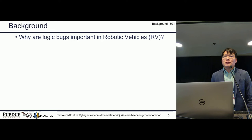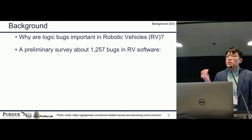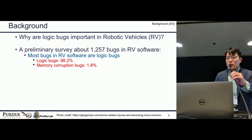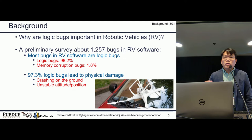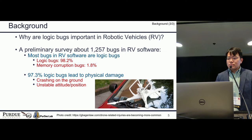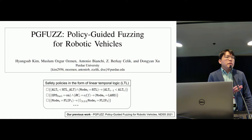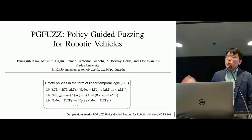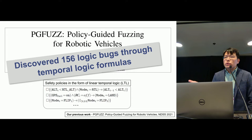Why should we pay attention to logic bugs? When our research team looked into more than 1,000 existing bugs in RV control software, we were surprised by two things. First, around 98% of bugs are logic bugs. Second, most of these logic bugs lead to physical damage such as crashing on the ground, or unstable attitude or position controls. We also discovered more than 100 logic bugs in our previous work.